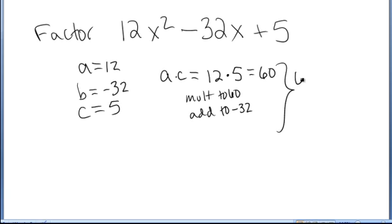I go off to the side and I think about the ways to multiply to 60. 60 is 1 times 60, or 2 times 30, or 3 times 20, or 4 times 15, or 5 times 12, or 6 times 10.